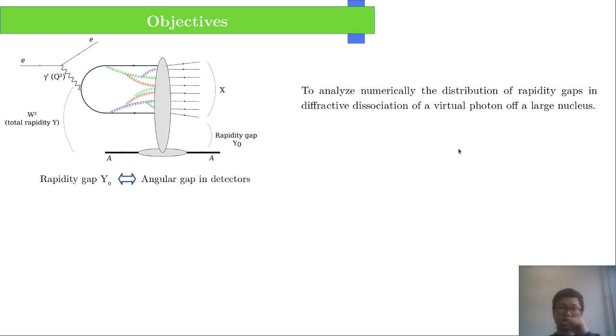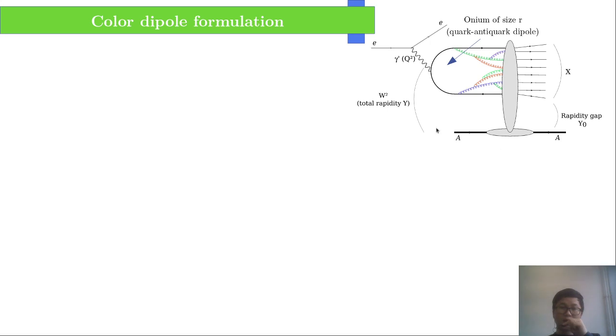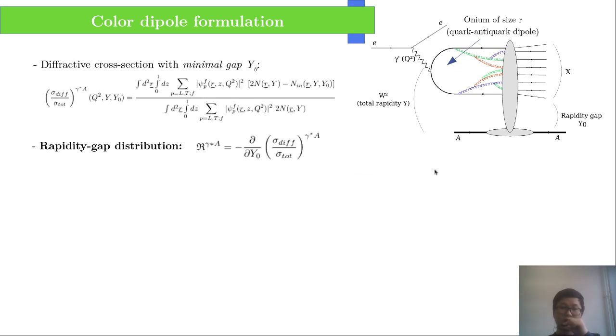We aim to analyze numerically the distribution of this gap in order to produce predictions for future EIC and to check for the prediction of a recent parton model feature for diffraction. Our calculation is based on the color-dipole formulation in which parton cross-sections are related to cross-sections of the onium. In particular, we will consider the diffractive cross-section with a minimal gap and the gap distribution.